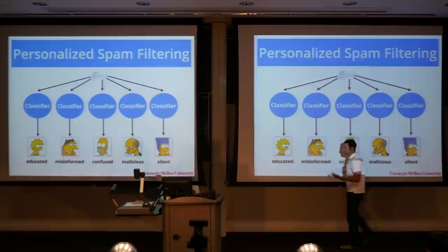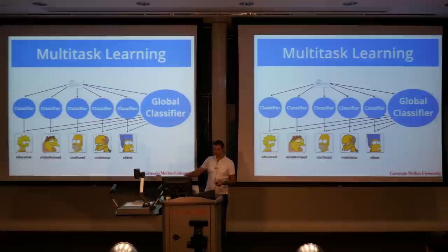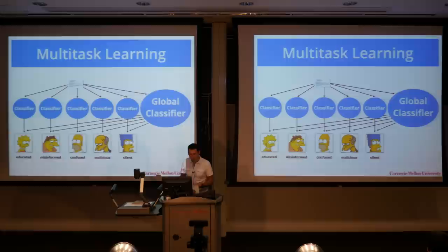The solution is to try to have the best of both worlds by using what's called a hierarchical model. In this hierarchical model, you basically have a global classifier which deals with the aggregate consensus of what is considered spam by most humans, and then also model the slight deviation that each individual has relative to the global classifier.